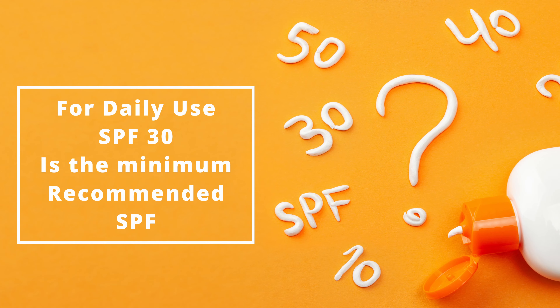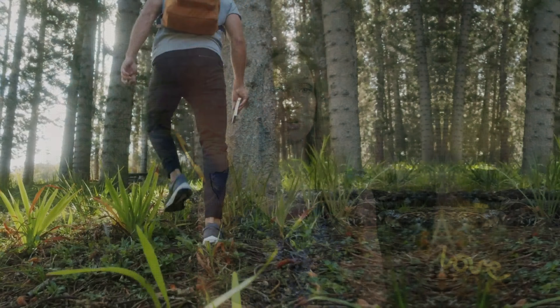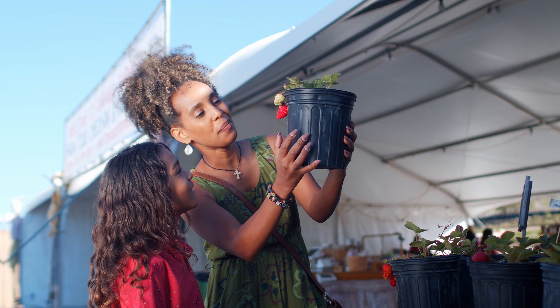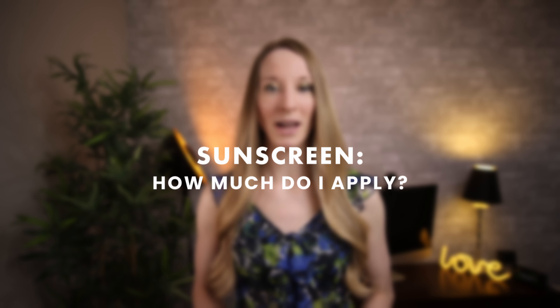Once you go over SPF 30, it's kind of diminishing returns — there's only about a 4% difference between SPF 30 and SPF 100. That's why most people recommend at least SPF 30 for day-to-day use, like running errands or driving. If you're going to be outside for longer periods — hiking, gardening, or in a lot of direct sun — I'd recommend going for SPF 50 or higher.